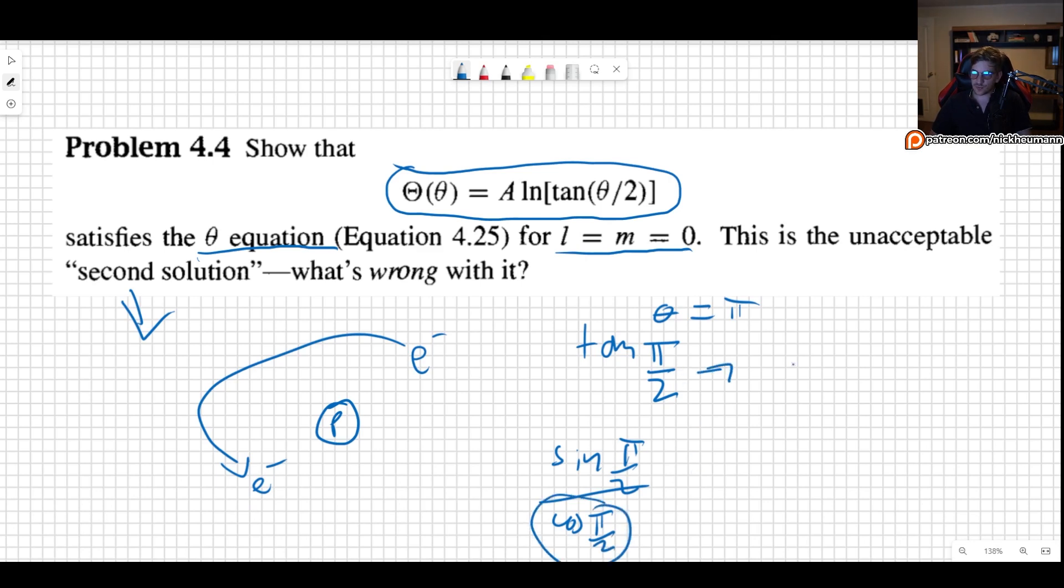So tangent of pi over two blows up, it goes to infinity, which means that we have the natural log of infinity, which goes to infinity. So that means that our solution blows up for theta equal pi. So that would mean that every time our electron goes near pi, things are going to get messy. So that's already bad.